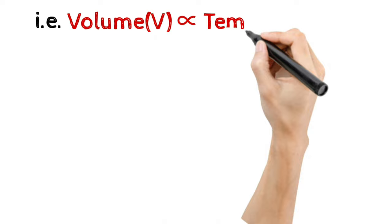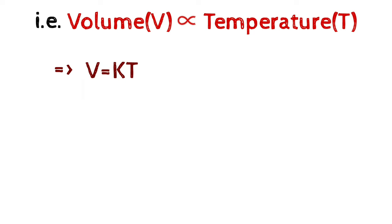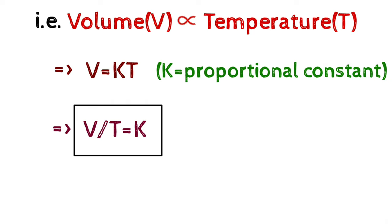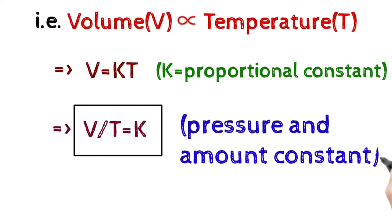Now this can be written as volume is proportional to temperature, which means V equals KT where K is the proportional constant. So we can write that V by T equals K. That means the ratio of volume and temperature is always a constant if the other two factors remain unchanged.